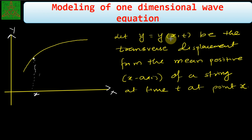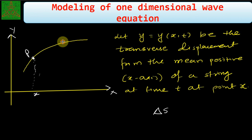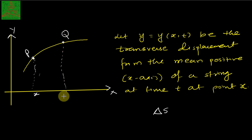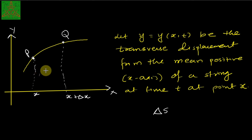Now let us consider a small portion of the string as delta s. Delta s is a small portion between point P and point Q, where Q is at x + delta x. The forces acting on this part of the string are the tensions at P and Q.